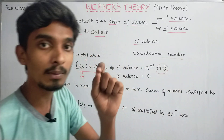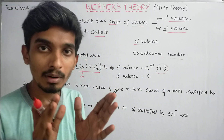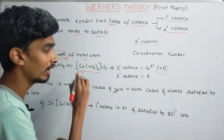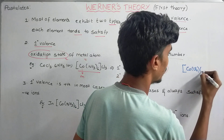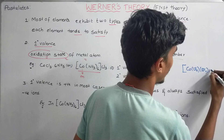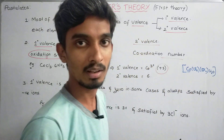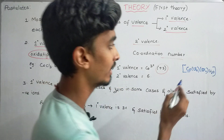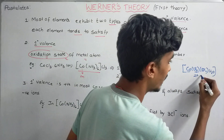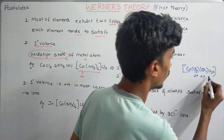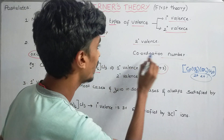Secondary valence refers to the coordination number of the particular complex. Coordination number is simply the number of ligands attached to the metal inside the bracket. For example, if a complex has 2 Cl, 2 Br, and 1 H2O as ligands: 2 plus 2 plus 1 equals 5. So the coordination number is 5.